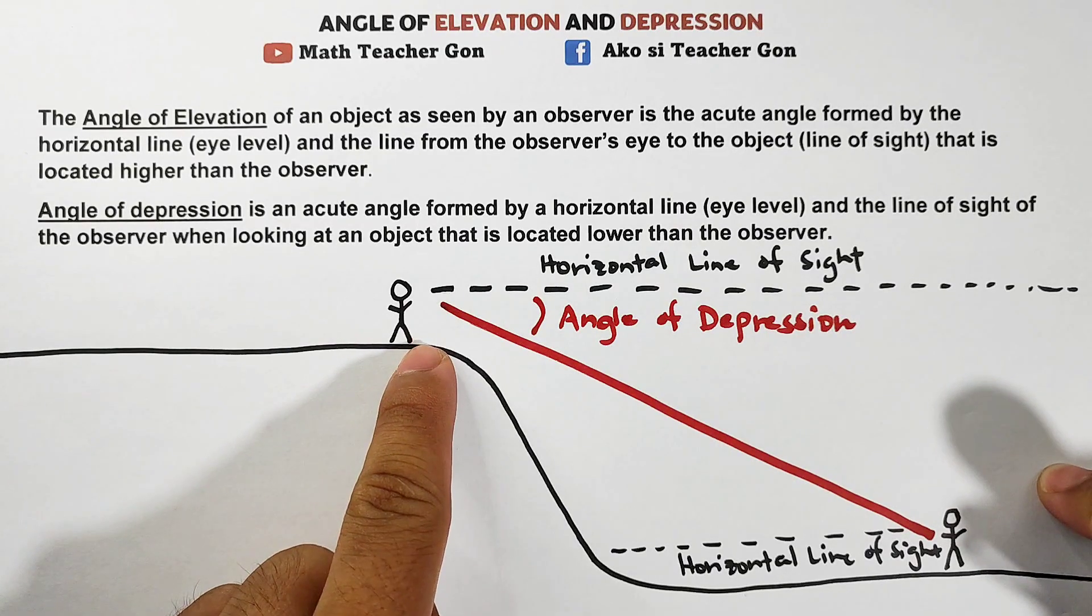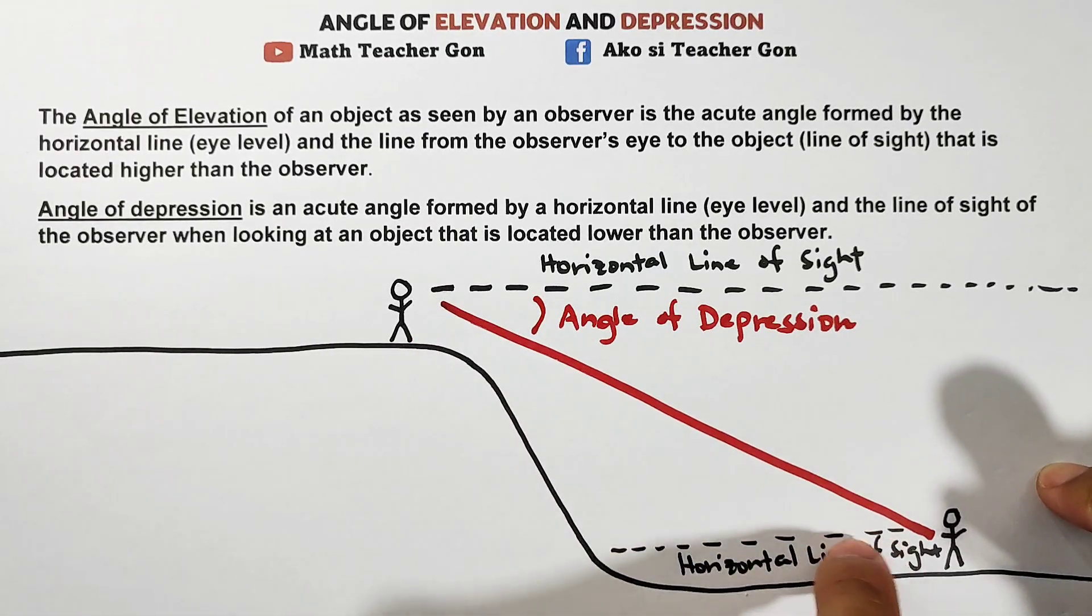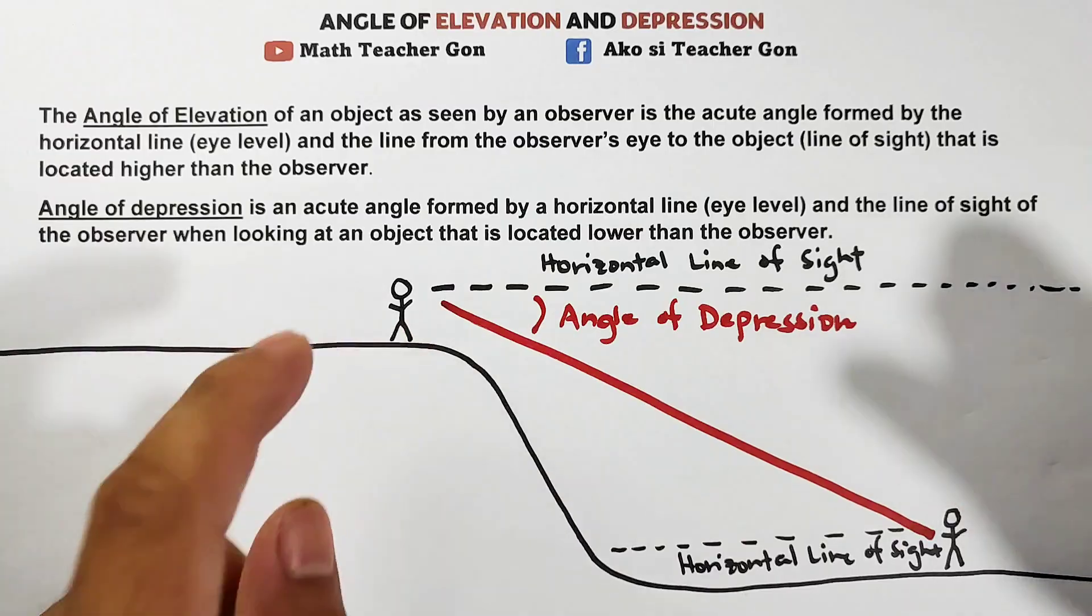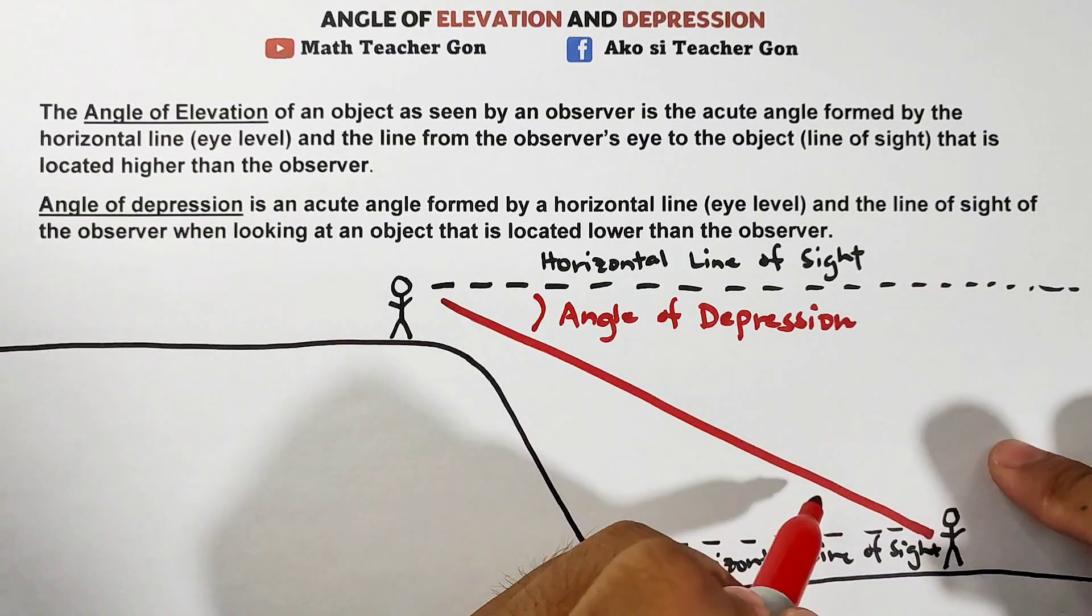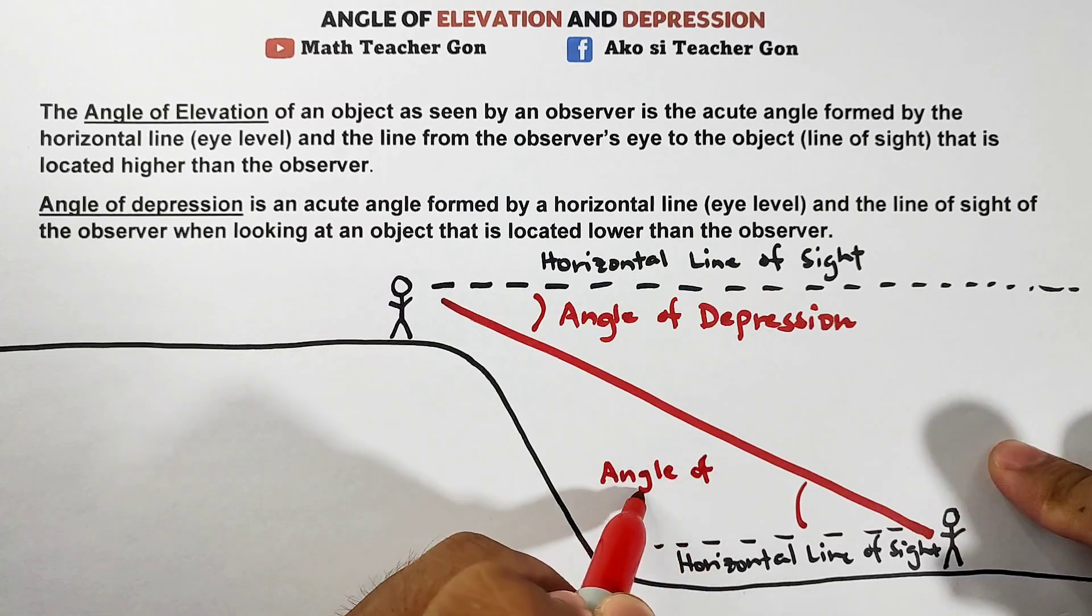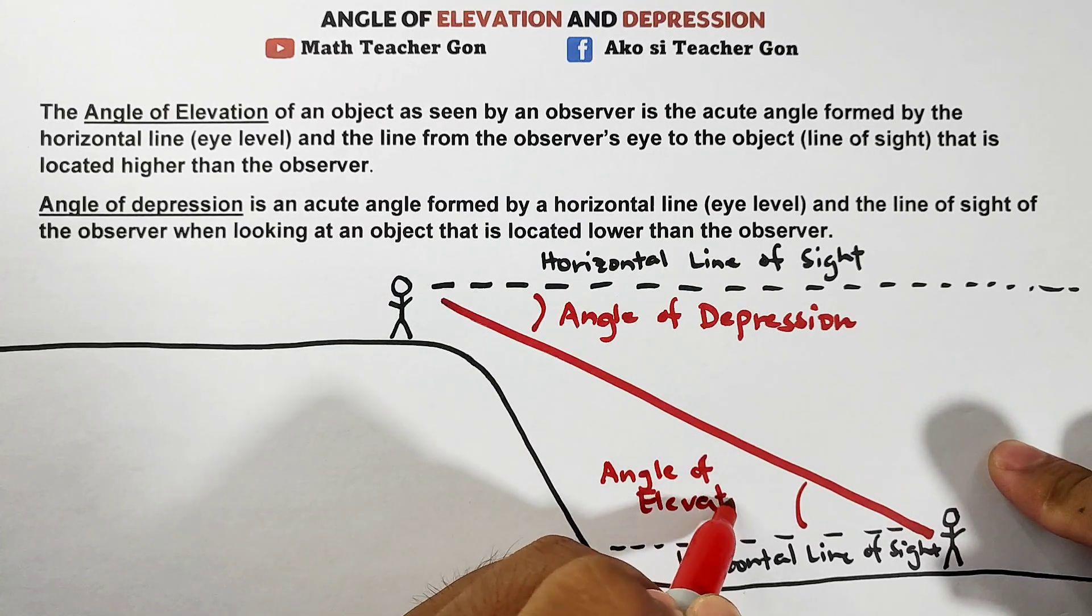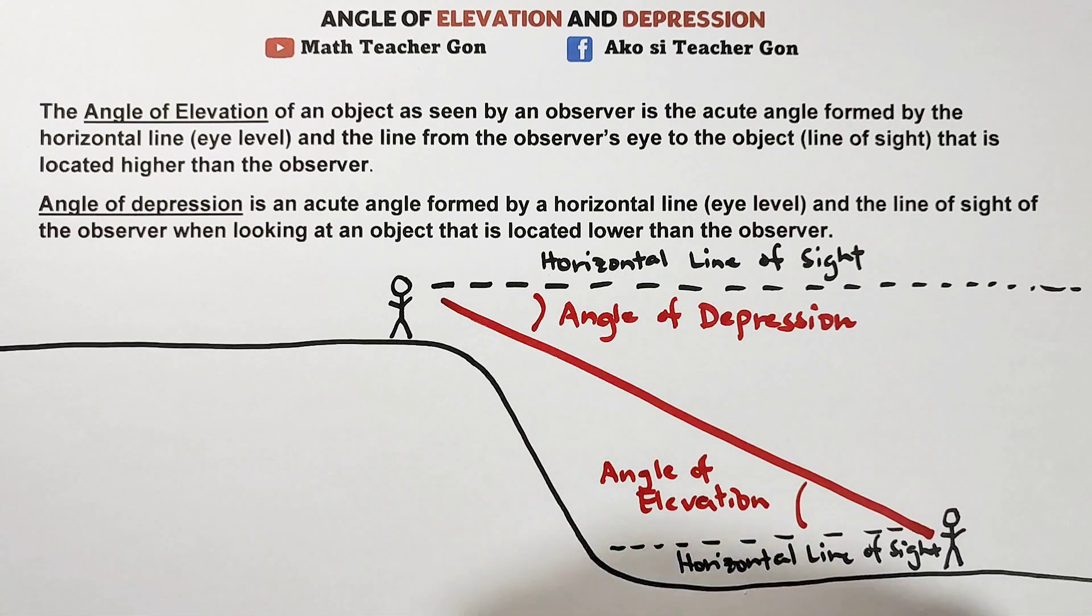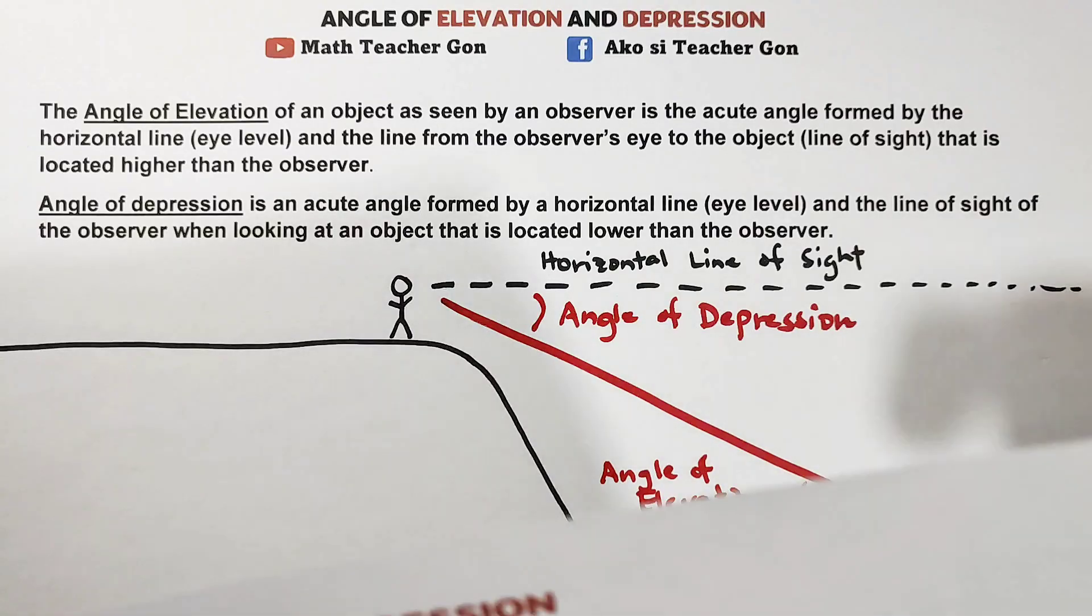As you can see, we have an angle between the horizontal line of sight and this line that forms when they see the person on the uphill. So this is your angle of elevation. Based on the name and the angle that we have, you can easily identify whether it is angle of depression or angle of elevation. Now let's solve some problems to better understand where we use angle of elevation and depression.